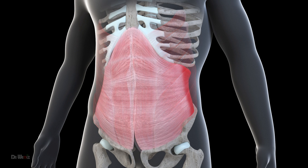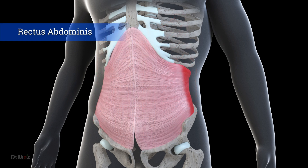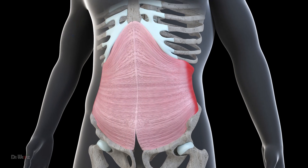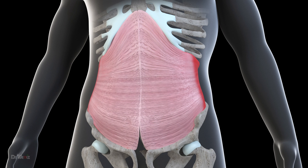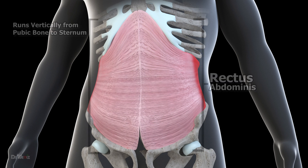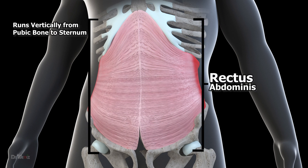Moving on to the rectus abdominis, which is the most well-known abdominal muscle. This muscle runs vertically from the pubic bone to the sternum and is responsible for flexing the trunk and creating the six-pack appearance.